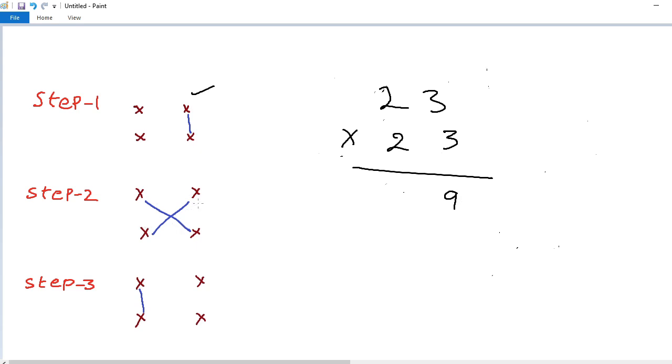Second step cross multiplication and addition. So 2 into 3, 6 plus 2 into 3, 6. 6 plus 6, 12 carry 1. Third step multiply tens digit place. So 2 into 2, 4 plus carry 1, 5. 529 is the answer.